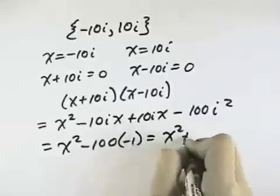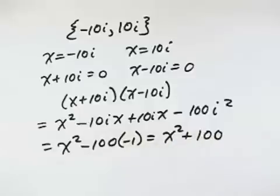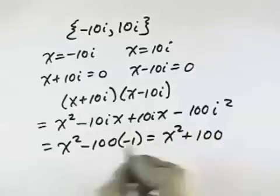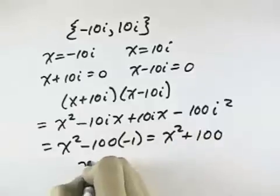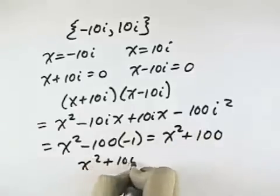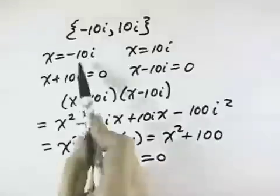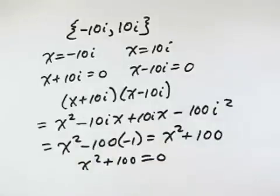That gives me x squared plus 100. So my equation would be x squared plus 100 equals 0, which has the solutions negative 10i and positive 10i.